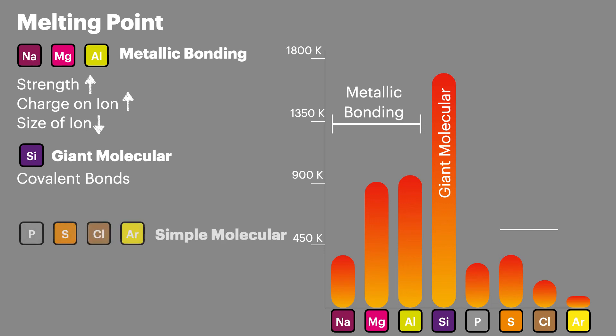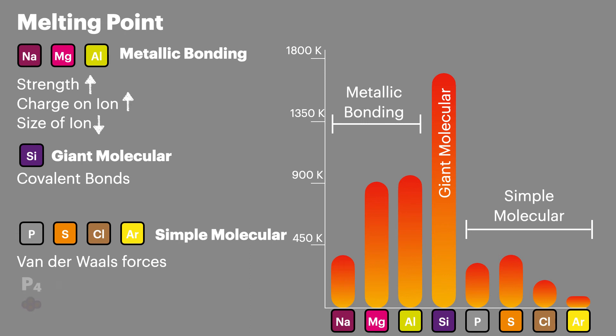Finally we have phosphorus, sulfur, chlorine and argon. These are simple molecular structures and it's the strength of the van der Waals forces that influence the melting point. Remember, the bigger the molecule, the stronger the forces. Here we have phosphorus which is P4, sulfur which is S8, chlorine which is Cl2, and argon which sits just on its own. So we can see that sulfur has the highest melting point of these simple molecular structures.